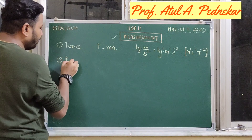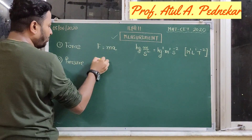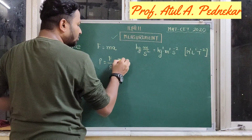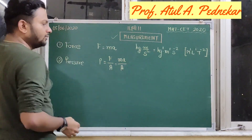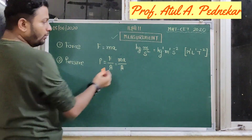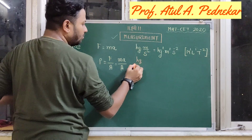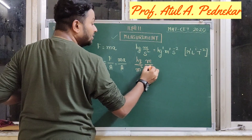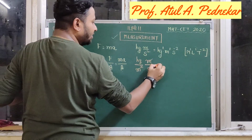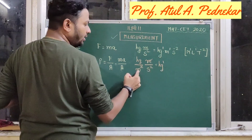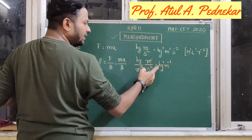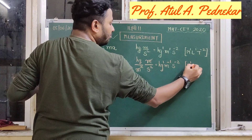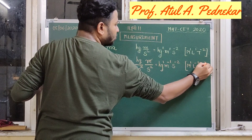The second physical quantity is pressure. We know pressure is calculated as force upon area. Force is mass into acceleration divided by area. The unit for mass is kilogram, area is meter square, and acceleration is meter per second square. One of the meter factors cancels. So we can write kilogram raised to 1, meter inverse, second square inverse. The dimensions are M1, L raised to minus 1, and T raised to minus 2.